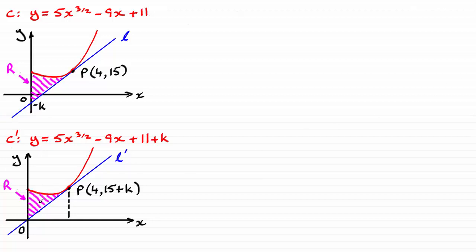We'll end up with exactly the same area R, but I've pushed the graph upwards by k units. So the new curve is going to be the existing equation plus k units, and the y-coordinate of P is going to be 15 plus k units. What I'm going to do then is to work out this area R by integrating the area under the curve between the y-axis and the x-axis between 0 and 4, and then subtract the area of this right angle triangle. And that will give me the area of R.